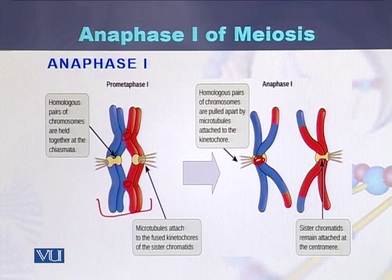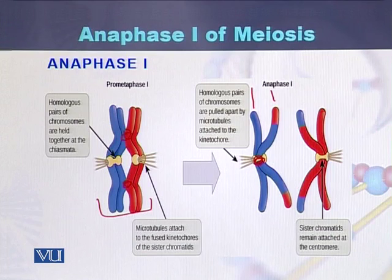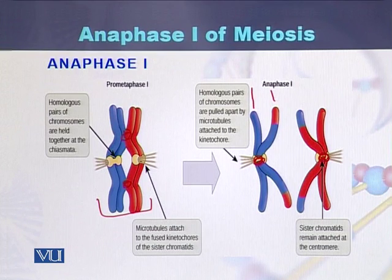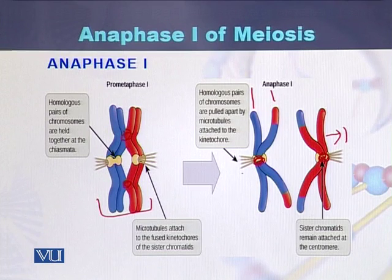This chromosome includes two sister chromatids: first chromatid and second chromatid. This chromosome will move to one pole. The kinetochore is where the two sister chromatids are joined. This chromosome moves to pole one, and the second chromosome moves towards pole two.